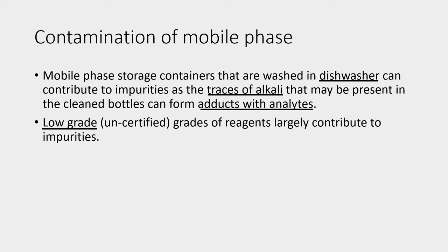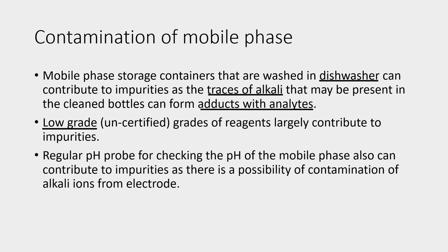A regular pH probe for checking the pH of the mobile phase can also contribute to impurities, as there is a possibility of contamination from alkali ions leaching from the electrode. Try to avoid the routine 10 mm pH probe for adjusting the pH of the buffers. There is a potential for alkali leaching out of the electrode, forming adducts that elute as impurities. Try to use a smaller probe — a 3 mm probe may be acceptable.